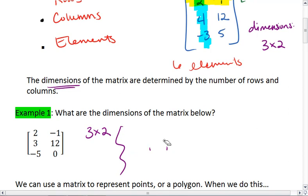What about this one? We have 2 rows and 2 columns. So, this is a 2 by 2 matrix. Knowing the dimensions of your matrix is very important, especially when we get into adding, subtracting, and multiplying matrices.